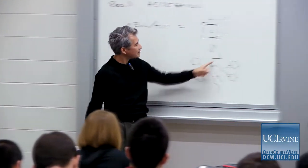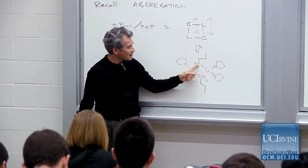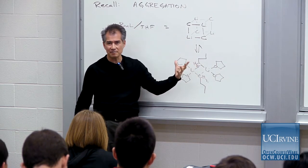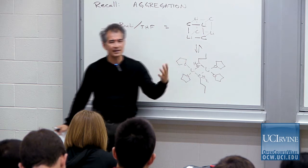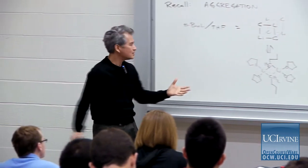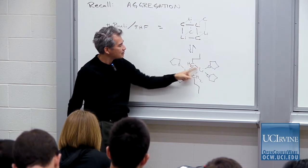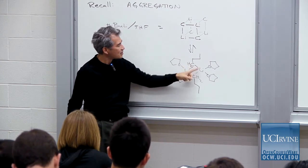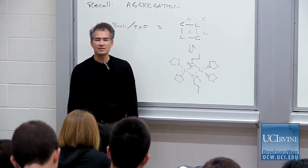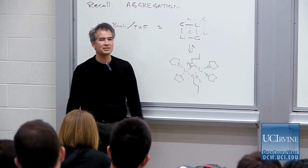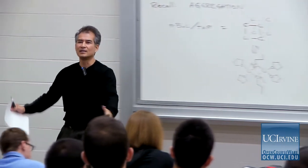Each butyllithium — each carbon atom here has not just four bonds, but five bonds to the carbon atom. As long as it doesn't violate the octet rule, that's okay. You can see what's happening because of this demand — the high nucleophilicity of this carbon-lithium bond and the demand of lithium to satisfy the octet rule — you get these weird aggregates. This is not the exception; this is the rule.